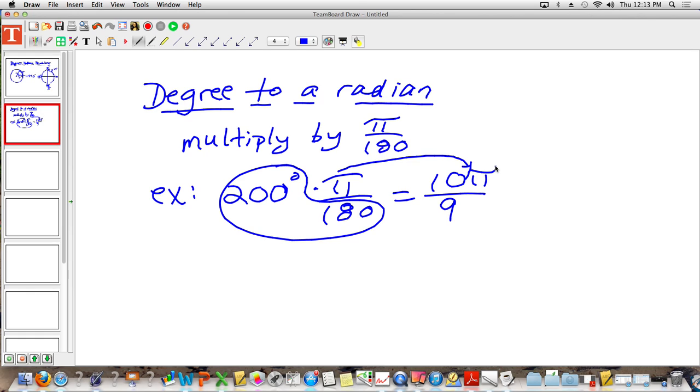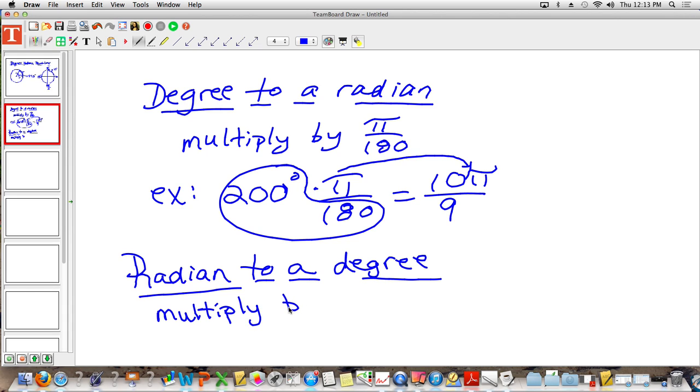What if you had to go backwards, though? What if you had to change a radian to a degree? What did I do? You had to multiply by what? You guys are killing me here. 180 over pi. Yeah. 180 over pi. It was the reciprocal of pi over 180. So we multiplied by 180 divided by pi.